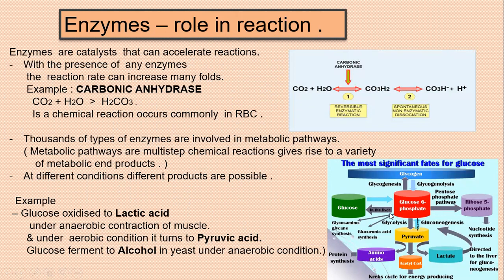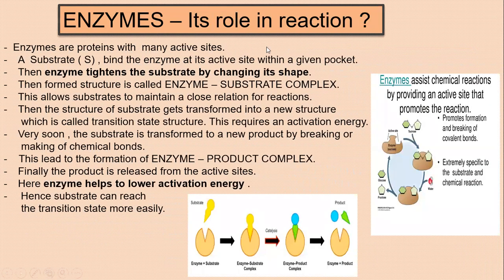In a metabolic pathway, there are different products and different reactions. In different reactions, different types of enzymes participate and different products are produced. Even from glucose itself, different products like lactic acid, pyruvic acid, and alcohol can be formed. There are different kinds of enzymes involved in different environments and conditions.